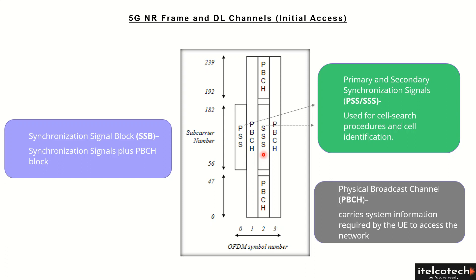If the user misses it, it can receive it again continuously every 20 milliseconds, which is very quick. The PSS sends one of three orthogonal sequences, and the SSS continuously sends one of 336 binary sequences.